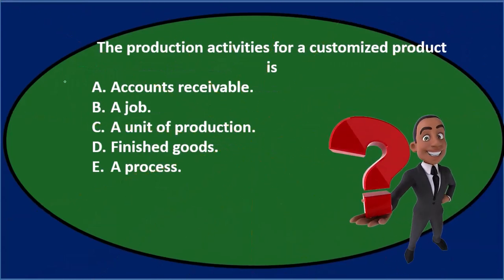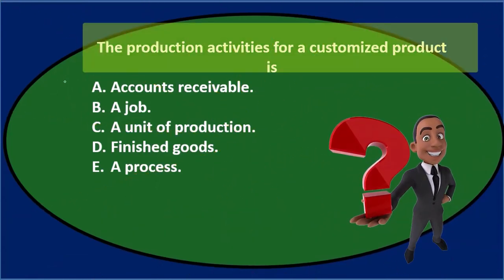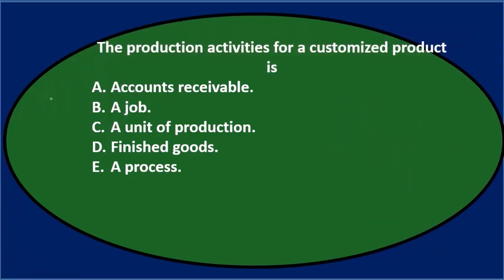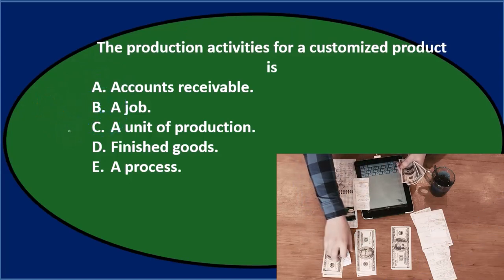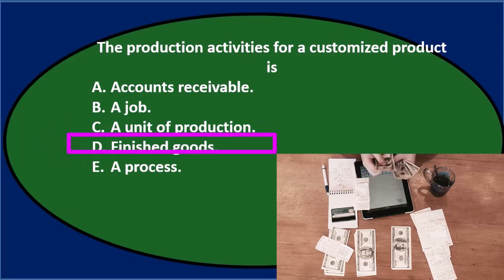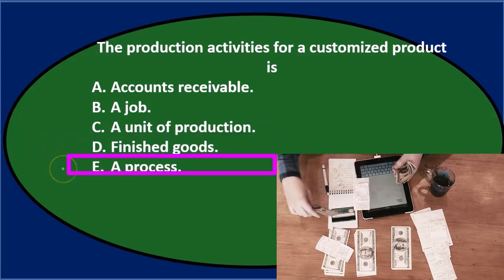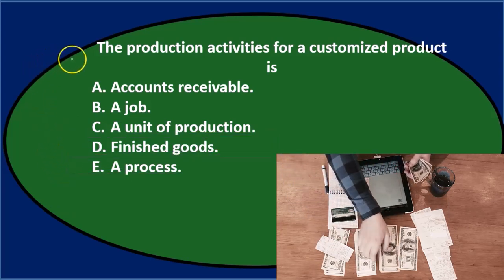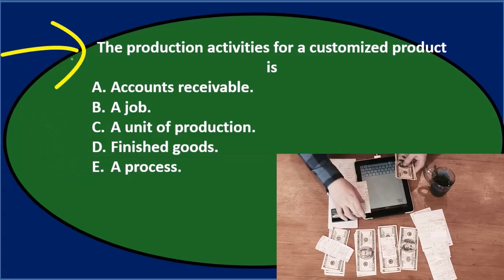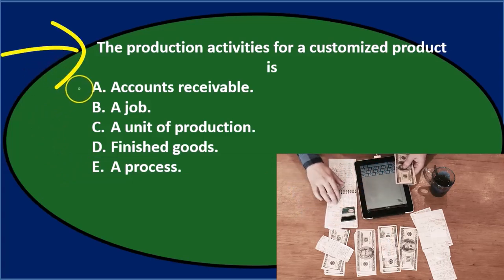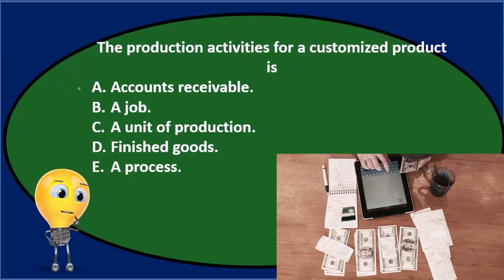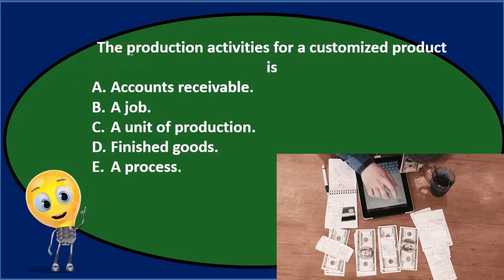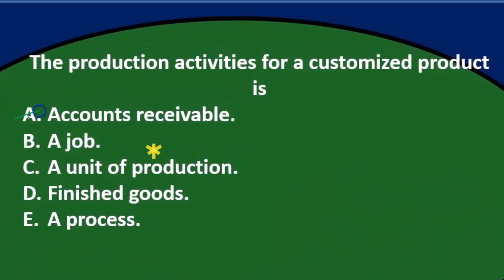Next question: the production activities for a customized product is A, accounts receivable; B, a job; C, a unit of production; D, finished goods; or E, a process. Let's go through this. Option A, accounts receivable — that just doesn't sound right at all. Production activities doesn't sound like accounts receivable, so I'm going to cross that out.